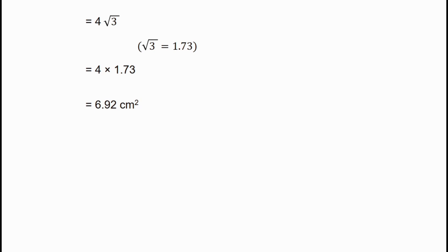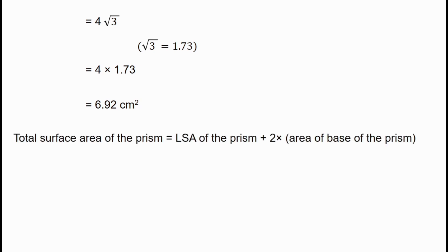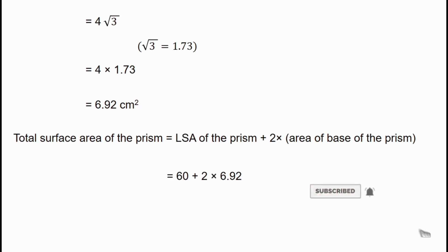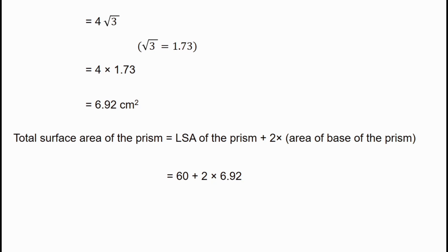Total surface area is equal to the lateral surface area of the prism plus 2 into the area of the base. Substituting the values: 60 plus 2 into 6.92. Computing, that is equal to 73.84 cm².